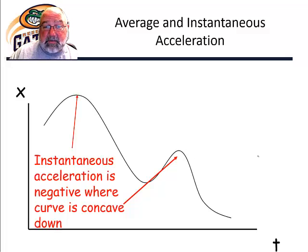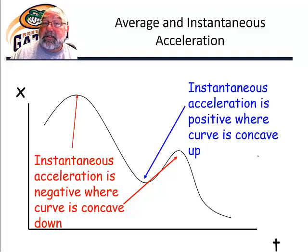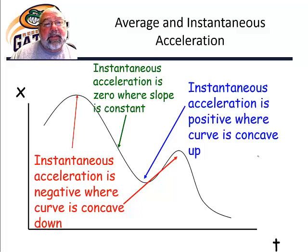And what do you think it's going to be when the curve is concave up? Well, the instantaneous acceleration is going to be positive. How about when the slope of the position versus time graph is constant? There, we expect to find the instantaneous acceleration is zero. The velocity is the slope of the position versus time graph. If the slope is constant, that would mean that the acceleration is zero.